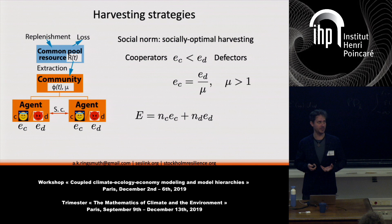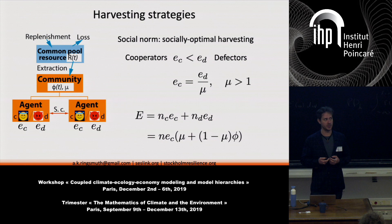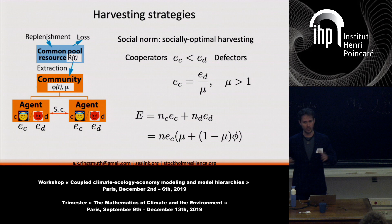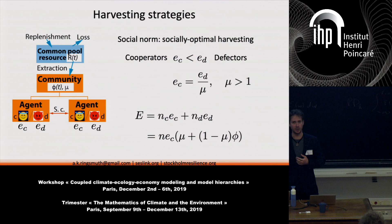The total community extractive effort is the sum of the number of cooperators times their effort, plus the effort of all defectors. We represent this using phi — the fraction of the population which is cooperative — approximated as a continuous variable, assuming the population is large enough. The key parameters are n, ec, and mu, and the crucial social variable is the cooperative fraction phi.